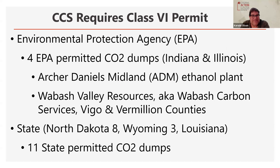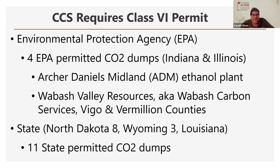CCS requires what is known as a Class 6 permit. The Class 6 permit was created back in 2010 exclusively and specifically for the underground storage or sequestration of CO2. Class 6 permits can be issued first by the EPA. The EPA has only issued four permits that are active — two of those are in Indiana, two in Illinois. In Illinois, that's the ADM Archer Daniels Midland ethanol plant in Decatur. And then what we're here to talk about tonight is Wabash Valley Resources, otherwise known as Wabash Carbon Services, who have two Class 6 permits for two of their planned CO2 dumps, one in Vigo and one in Vermillion County.